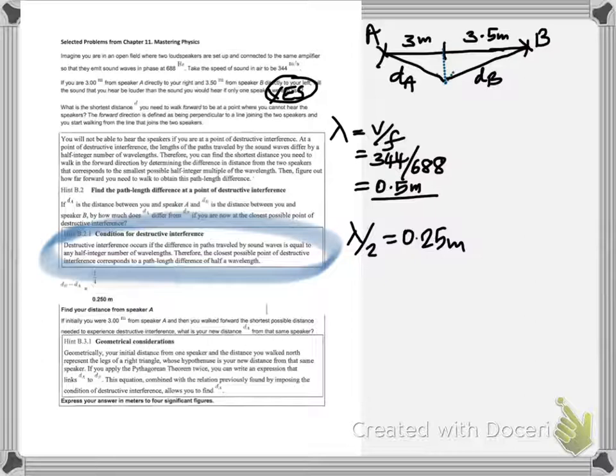The initial distance is d_A and d_B. You can find the wavelength using velocity by frequency. You get it at 0.5 meter.